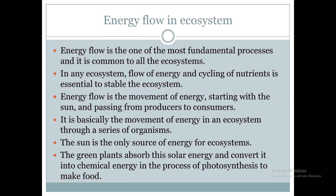For both the grassland ecosystem and pond water ecosystem, the source of energy is only the sun. From the sun we get 100% energy, which is absorbed by green plants. The green plants absorb the solar energy and convert it into chemical energy in the process of photosynthesis. That solar energy is converted into chemical energy for making their own food, which will then be consumed by consumers.